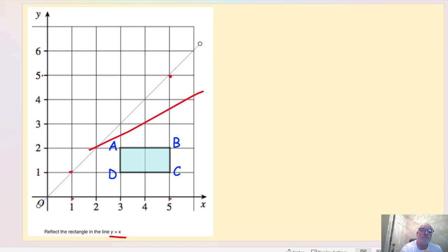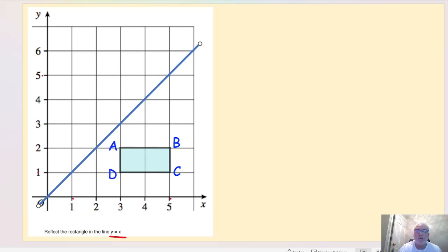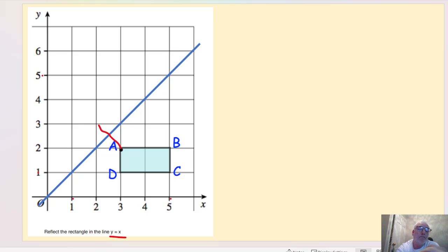Once I've identified those points, I put my line starting at zero and draw it diagonally through those same points — making it a little thicker so we can see it. Now I pick each vertex individually. For vertex A, I go diagonally to the reflective line — it's half a square away — then keep going the same direction for half a square more. That's where that vertex goes.